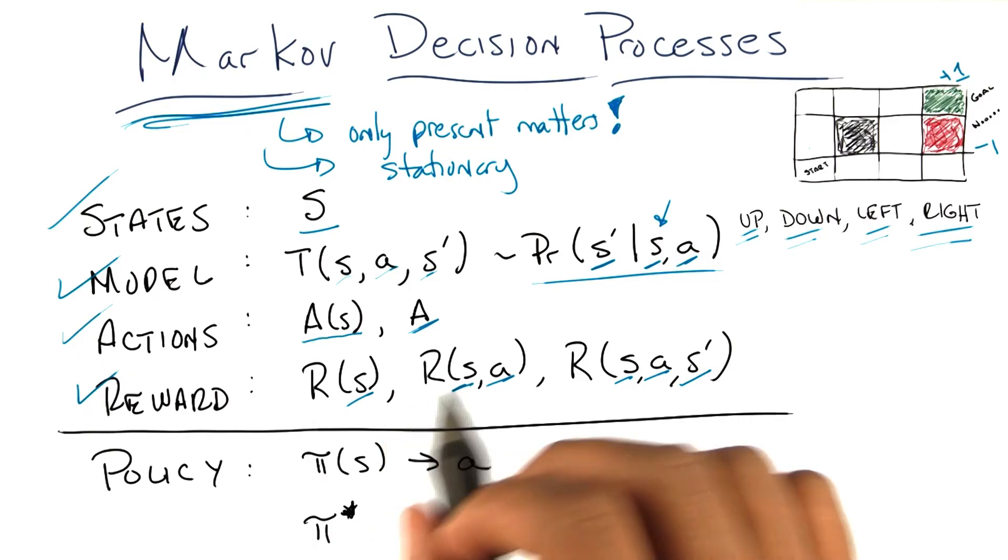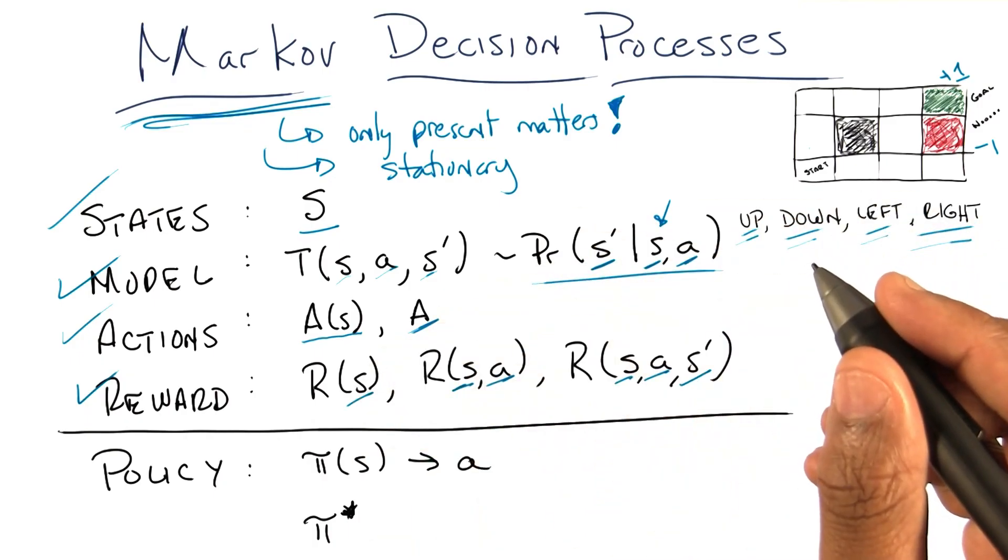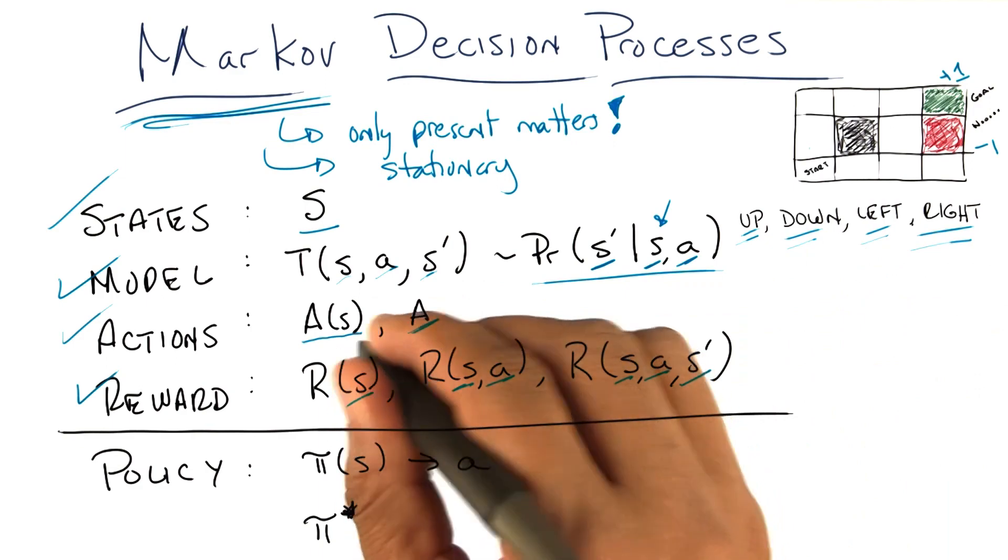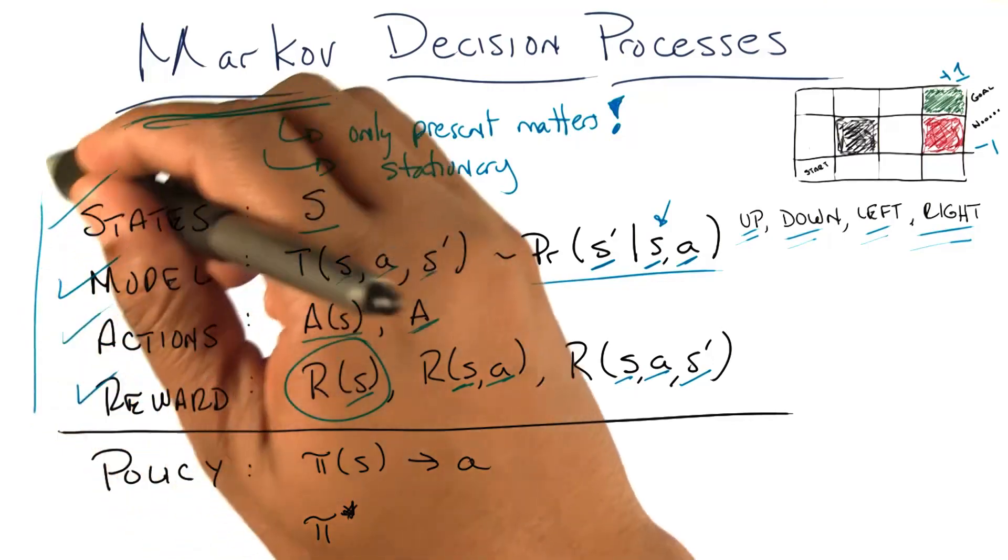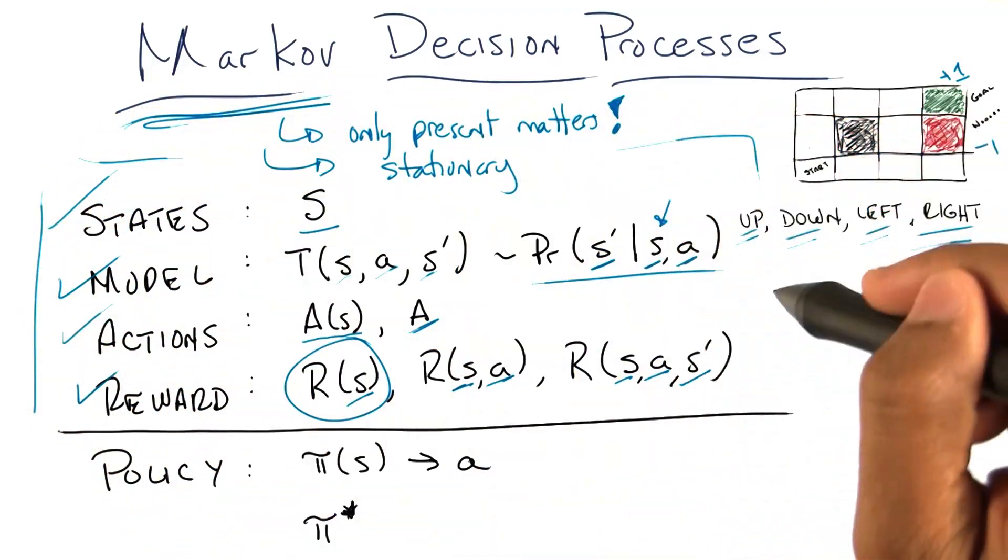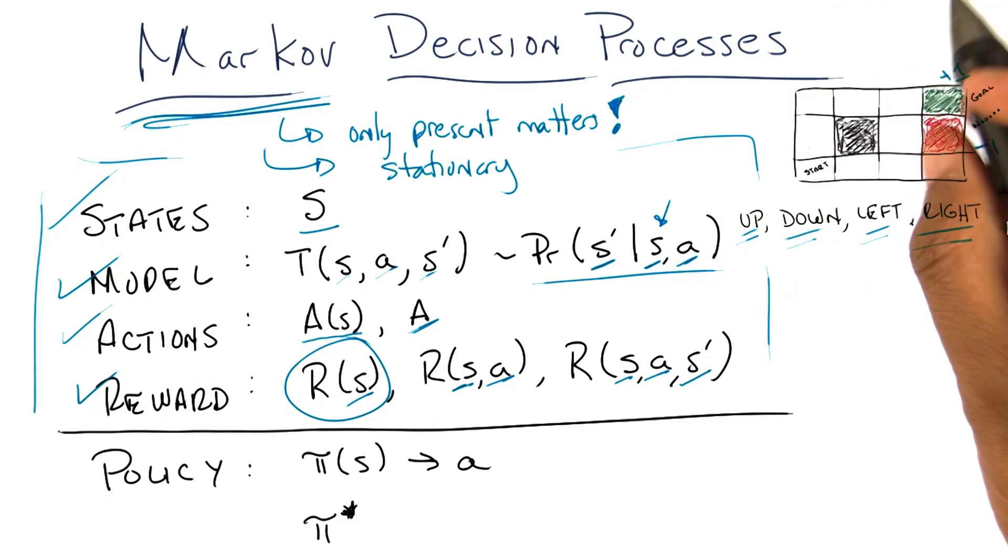But often it's easier to think about one form or the other. But for the purposes of the rest of this discussion, really you can just focus on this one: the reward or the value of entering into a state. And those four things, by themselves, along with this Markov property and stationarity, defines what's called a Markov decision process, or an MDP.